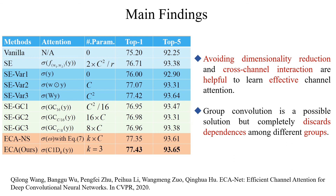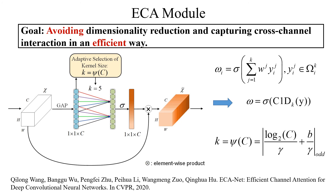So our goal is to avoid dimensionality reduction and capture cross-channel interaction in an efficient way. Our ECA model captures the relationship between adjacent channels through 1D convolution, so as to obtain local cross-channel interaction.